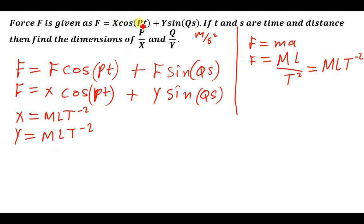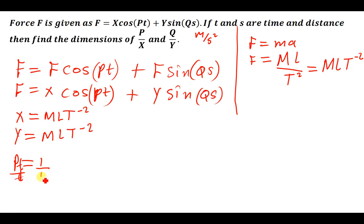Let us find the dimensions for P and Q. For P, the argument of cosine is pt. Since an angle is a dimensionless constant, pt equals 1 (dimensionless). Dividing both sides by t, we get P equals 1 over t, meaning the dimensions for P are T to the power negative 1.